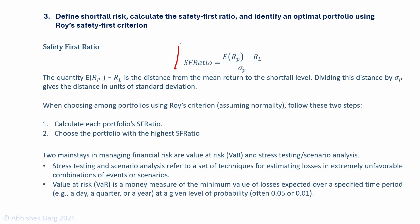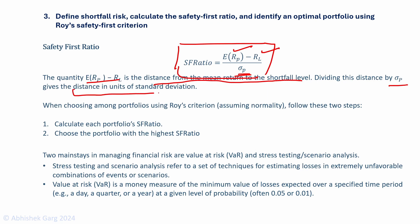This is calculated using the safety first ratio: the expected portfolio return minus the target return RL, divided by the standard deviation of the portfolio. The numerator is the distance from the mean return to the shortfall level, and dividing by standard deviation expresses that distance in units of standard deviation. When choosing among portfolios using Roy's criterion, first calculate each portfolio's safety first ratio, then choose the portfolio with the highest ratio.